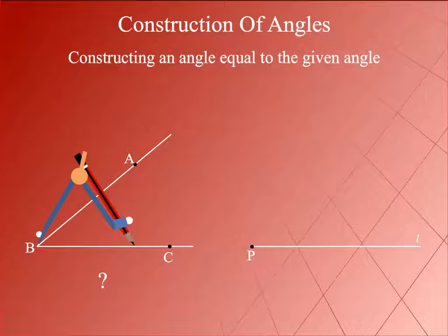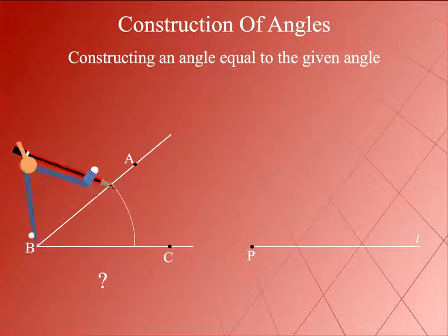Place the compasses at B and draw an arc to cut the rays of angle ABC at X and Y, as shown here.